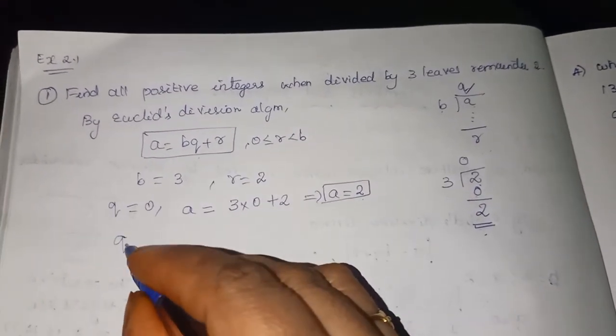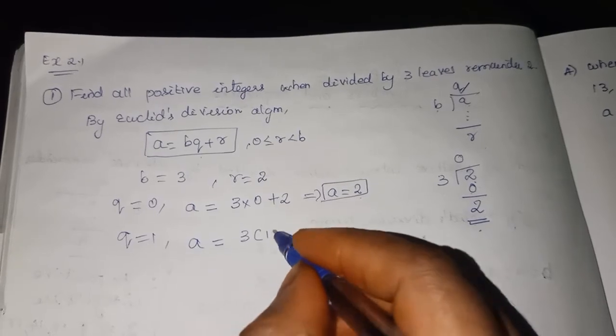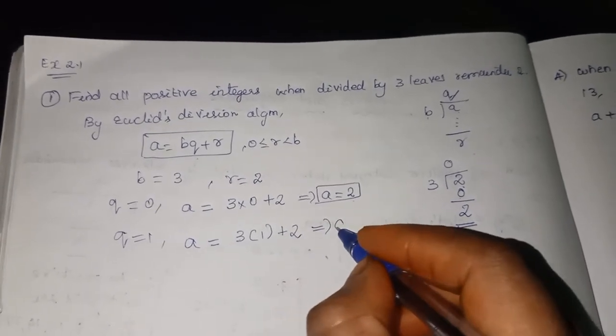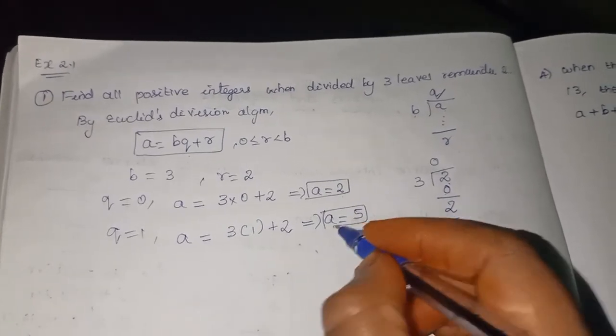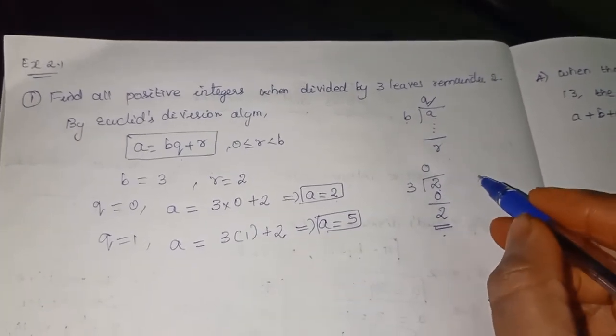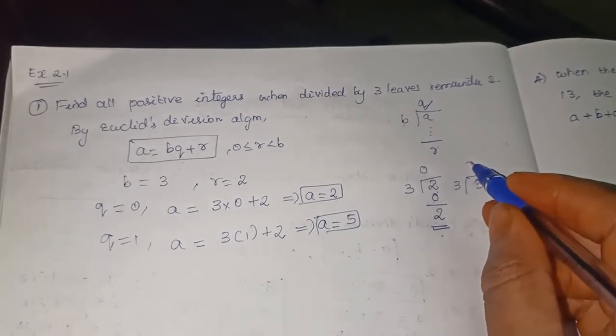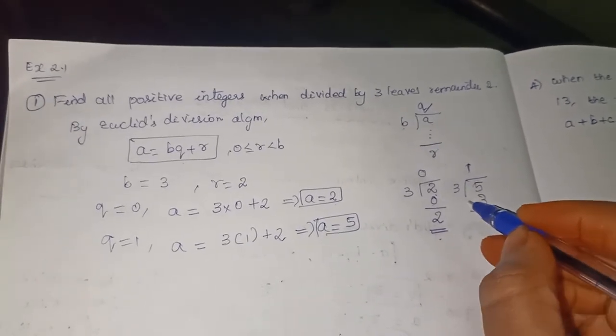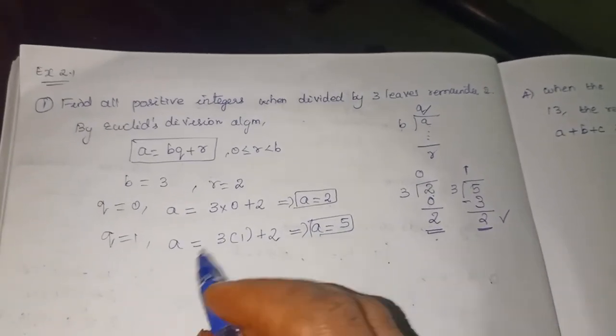Next, start applying Q is equal to 1. A is equal to 3 into 1 plus what? R is 2. So what you are getting? A is equal to 3 plus 2, equals 5. So you can divide and check. 5 is a positive integer. When you divide by 3 what happens? 1, 3 is 3. 5 minus 3 is 2. You are getting the remainder 2. This is the actual concept.